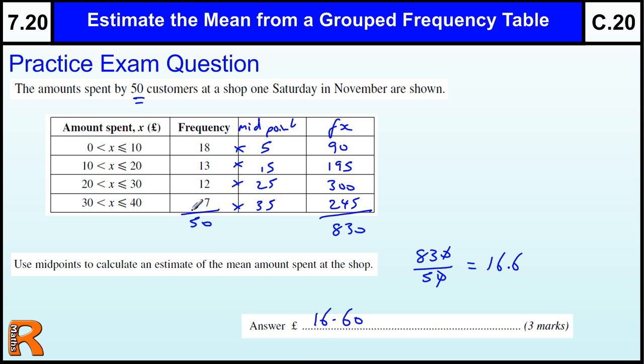So that's estimating the mean. It's very routine, very standard. It's done the same way every single time. The only thing that might change is the table might be horizontal, not vertical. And therefore, these two columns would have to go underneath. Or you could rewrite it out this way. It wouldn't make any difference. So, estimate the mean for groupings is a nice standard question that you can routinely learn how to do.